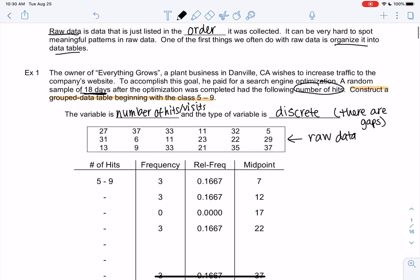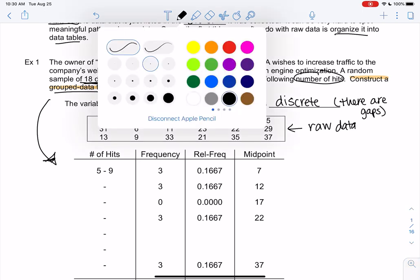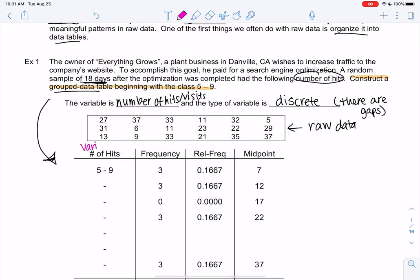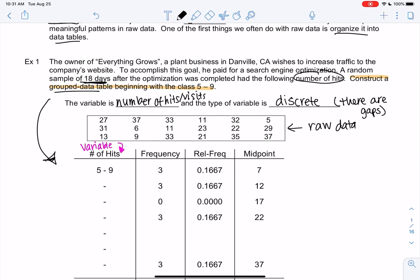Below I started something called a grouped data table. Our first column will be the variable, so I'm going to label it in pink just to remind us what this is. We'll always put the variable in the first column, so that's the number of hits. Frequency we'll go over in a second, and then relative frequency and midpoint we'll get into. So let's start with the variable. We're going to group it. The numbers are just so spread out. It looks like we have as low as five and as high as 37. If I were to make a table with single numbers, it's going to take a long time to get to 37. It's going to be a really long table.